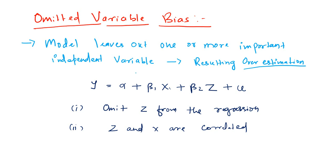In this video I am going to discuss about what is the omitted variable bias. This happens when you leave out one or more important variables from the model, which will result in some sort of a bias. When you leave some important independent variables from the regression, that will result in a bias and we call that omitted variable bias.